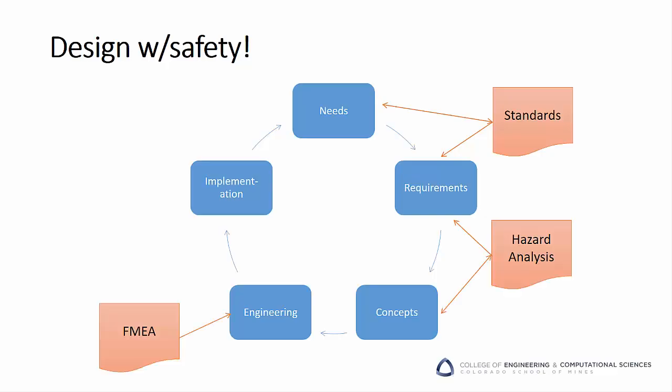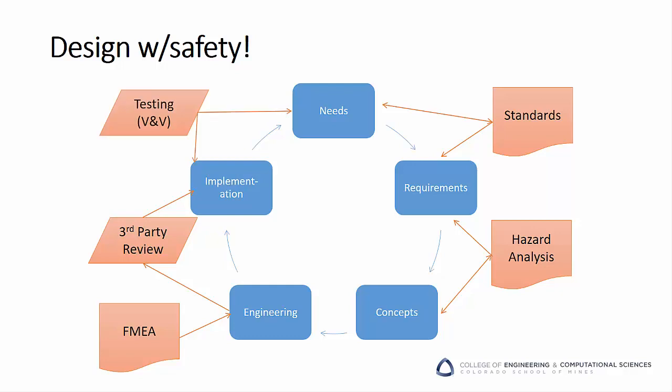Luckily, there are many tools to help us here. Hazard analysis and failure modes and effects analysis help the design team internally check our designs and look for holes in our logic. They help us imagine those myriad alternative uses for our products. Third-party reviews, sometimes linked to testing by certified labs, help question assumptions that a design team may be working under that could impact safety. They also bring new perspectives to the design, perhaps pulling in a broader range of stakeholders. And finally, testing forces us to verify and validate our assumptions and prove that we are meeting needs and requirements in the real world. Together, these things help us design safe, robust products.